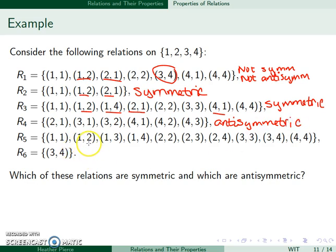My next one, I have 1,1. I have 1,2 but not 2,1. I have 1,3 but not 3,1. 1,4 but not 4,1. 2,3 but not 3,2. 2,4 but not 4,2. And then 3,4 but not 4,3. So this one is also antisymmetric.